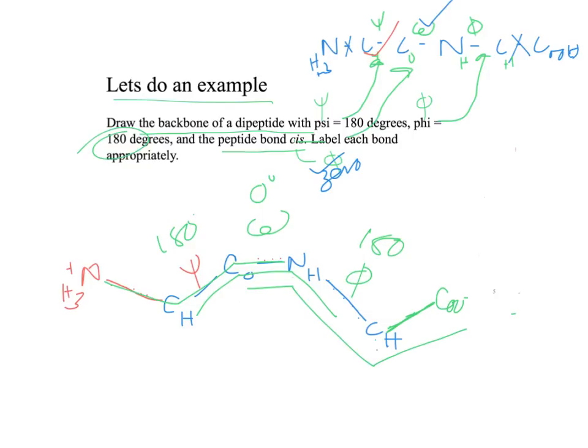You can practice a whole bunch of these on your own. All you have to do is change psi to either zero or 180, phi to zero or 180, and the peptide bond as cis or trans. The only reason we're doing zero and 180s is because on a two-dimensional piece of paper you can only draw planar structures. Not all phi and psi angles are zero and 180 — as you can see from the Ramachandran plot, they're almost never zero and 180. But for drawing a dipeptide, you can only ever draw them as zero or 180.